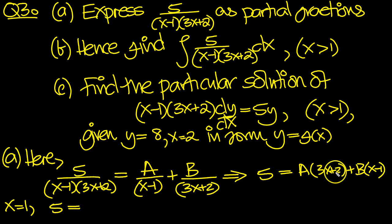Put 1 in here. 3 times 1 is 3 plus 2 is 5. So that's 5A. And we put 1 in because this would be 0. So that tells us then A is equal to 5 over 5. So A is equal to 1. So that's the first thing to do.